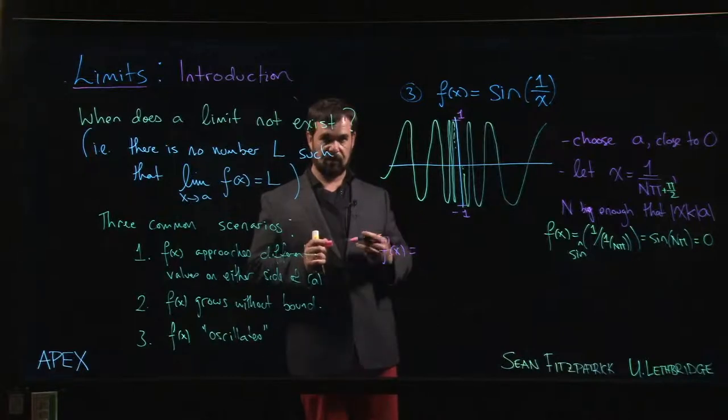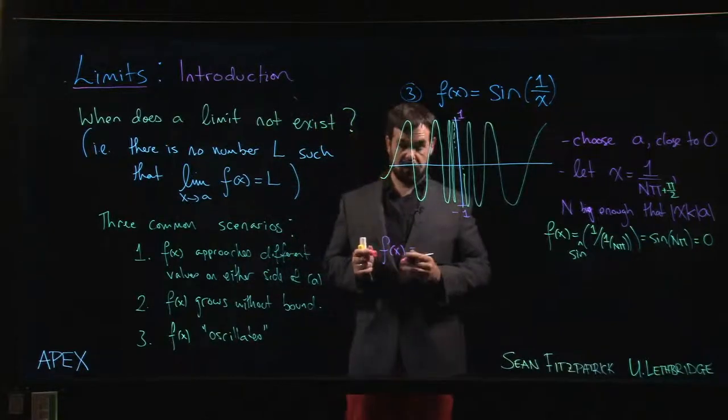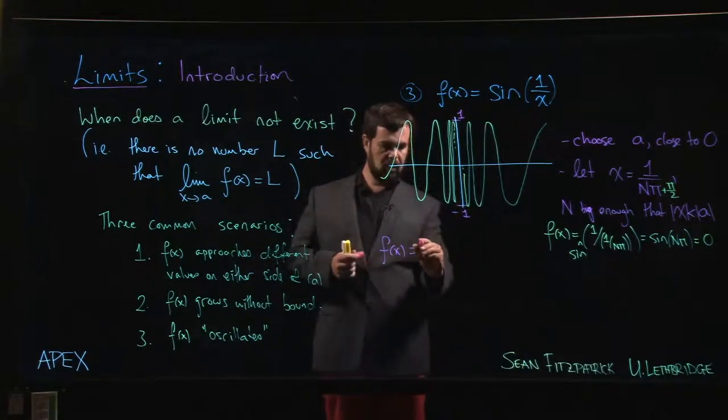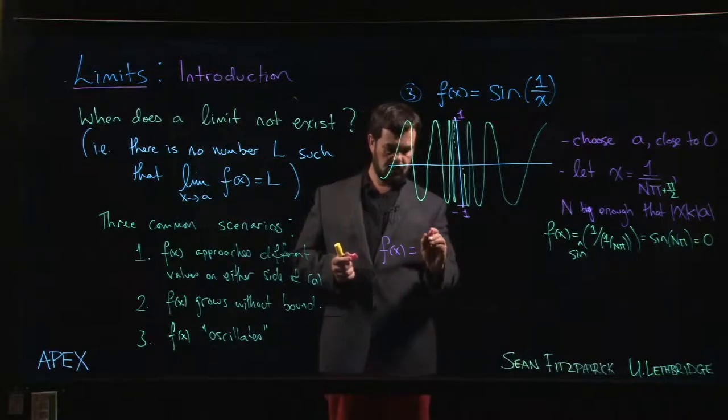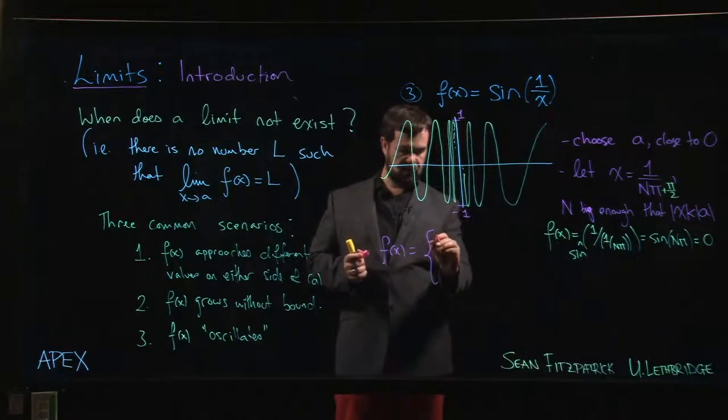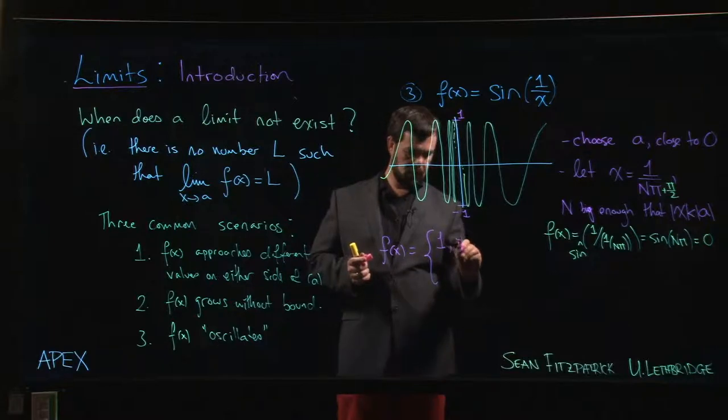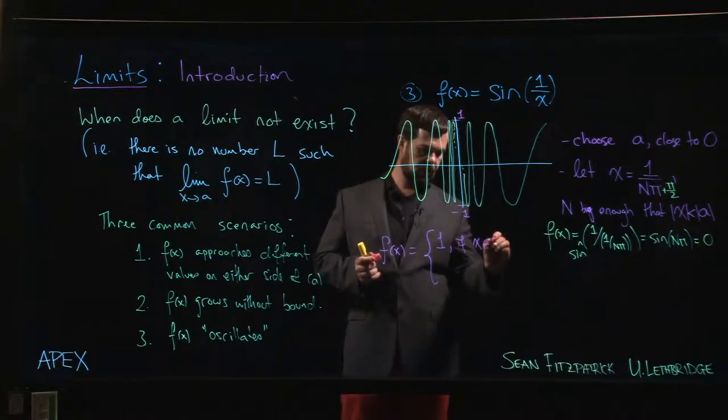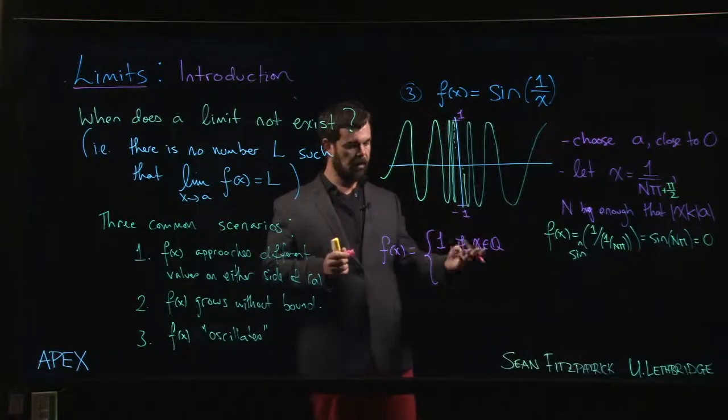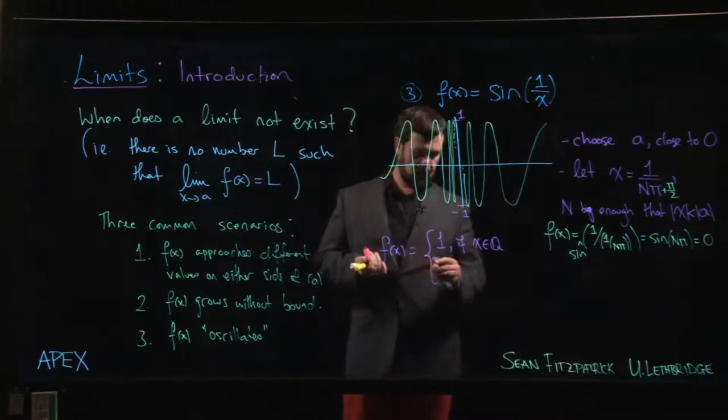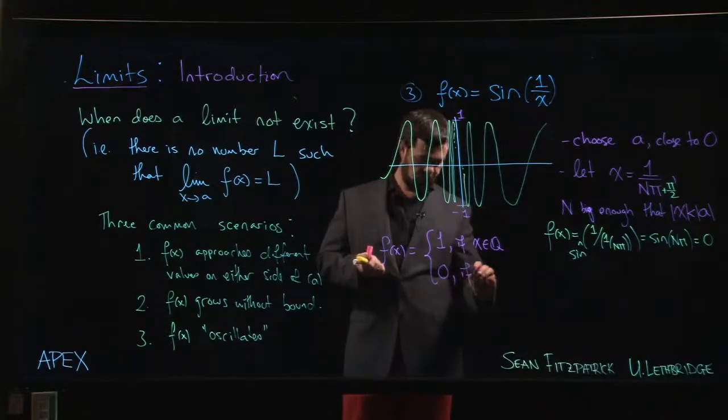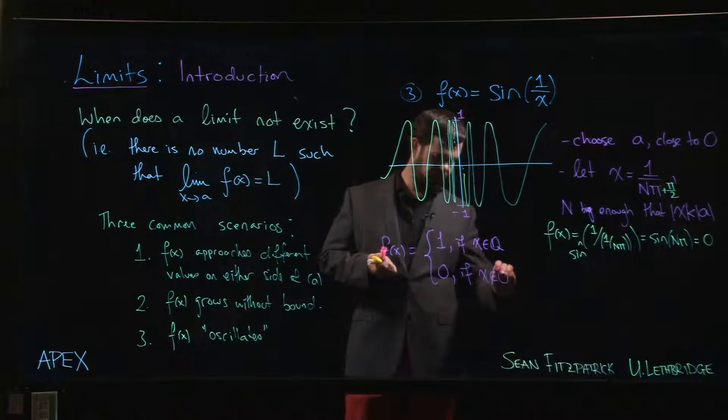Chances are you won't see examples like this until your second or third year in an advanced calculus or analysis course. Here's a function which is really badly behaved, and it is nonetheless a function. I could define it to be equal to 1 if x is an element of the rational numbers. So if x is a fraction, integer over integer, I'll assign a value of 1. I'll assign a value of 0 if x is irrational.